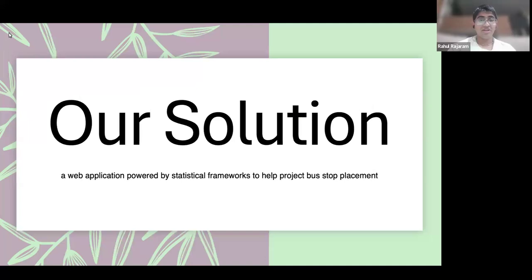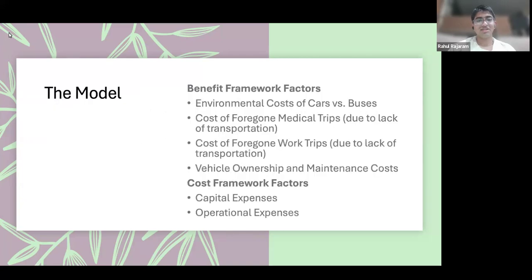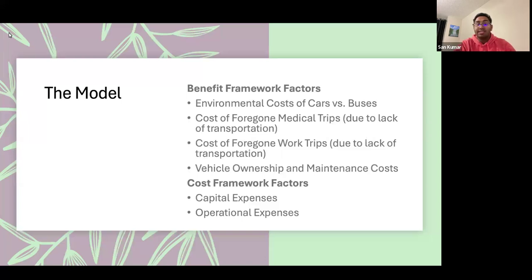Our solution is a web application that's easy to use, powered by statistical frameworks to help project bus stop placement. Our model consists of a benefit and cost framework. The benefit framework includes environmental costs of cars, the cost of foregone medical trips, the cost of foregone work trips, and vehicle ownership and maintenance costs. The cost framework consists of capital and operational expenses for buses.